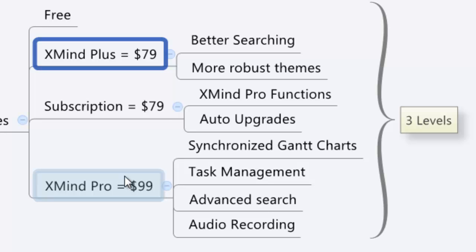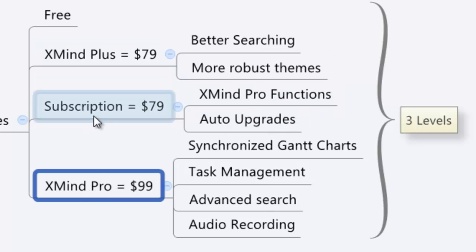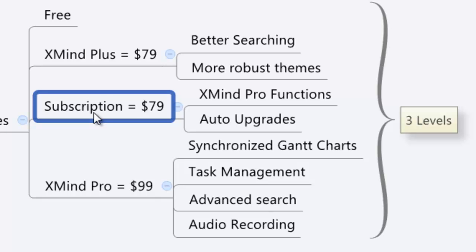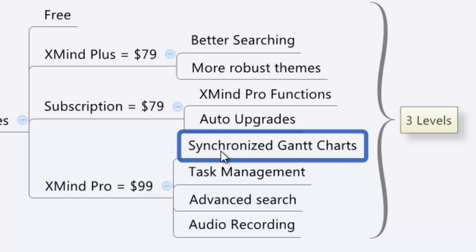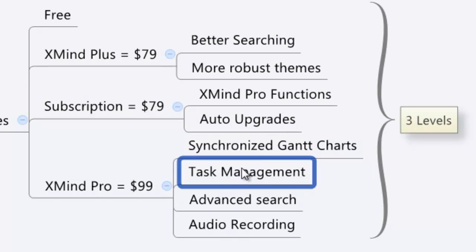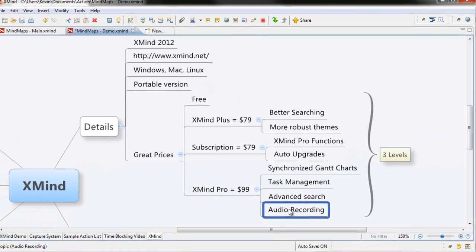The free version gives a ton of good features. XMind Plus adds better searching and more themes. The subscription is the same as XMind Pro but renews yearly and always includes upgrades, whereas XMind Pro 2012 won't get future upgrades. One of the best reasons to buy is synchronized Gantt charts that actually sync with the mind maps, plus task management with start and end dates, advanced searching, and a really cool audio recording feature I'll talk about more later.